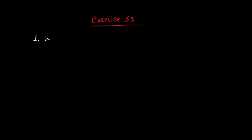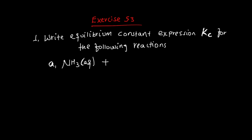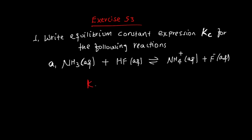Exercise 5.3: Write the equilibrium constant expression Kc for the following reactions. First reaction: Ammonia (aq) reacts with hydrogen fluoride (aq) to produce ammonium ion (aq) plus fluoride ion (aq). The Kc expression is: concentration of ammonium ion times concentration of fluoride ion, divided by concentration of ammonia times concentration of hydrogen fluoride.